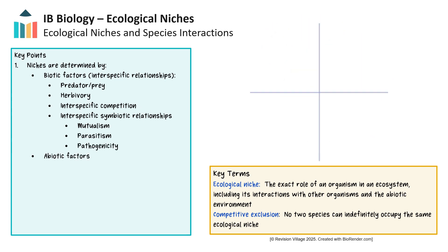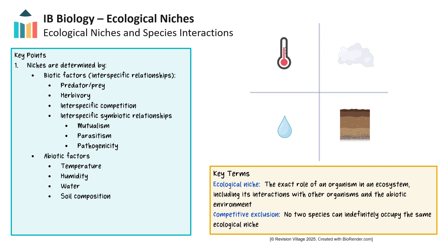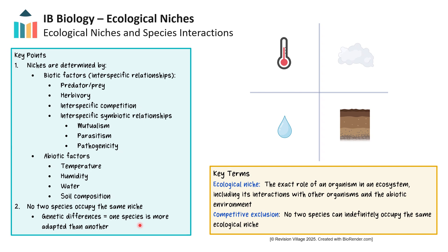An organism's niche is also determined by its tolerance to abiotic factors, like the range of temperatures and humidity the species can survive in, as well as the access to water they require, or soil composition for plants. No two species occupy the same niche as their genetic differences ensure that one species is more adapted to a variety of biotic and abiotic factors than another species. We can explore this concept when considering fundamental and realized niches.